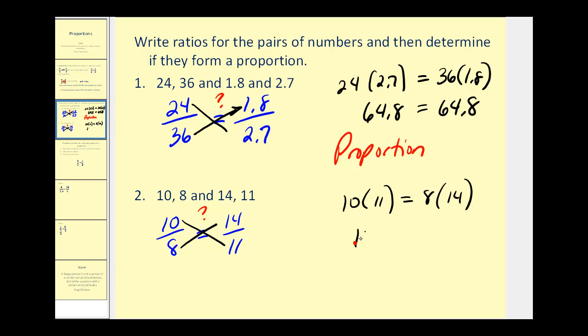10 times 11 would be 110. 8 times 14 would be 80 plus 32, or 112. Well, these aren't equal, therefore these ratios do not form a proportion.